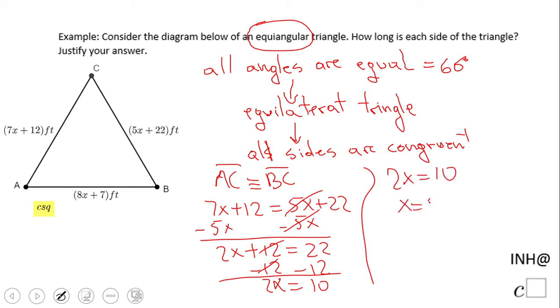That will give us x = 5. Now they asked us to find how long each side is. Let's look at this one here. That will be 7 times 5 plus 12, which is 35 plus 12, which equals 47.